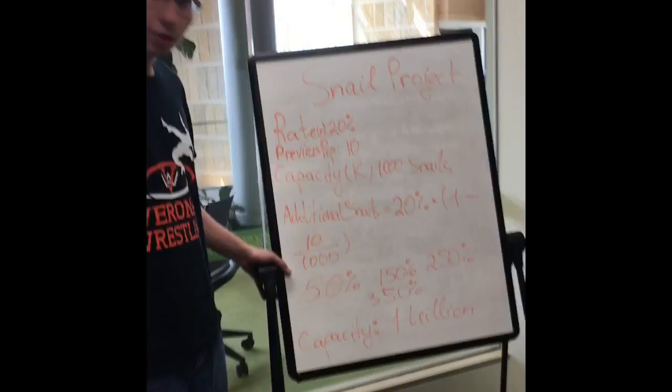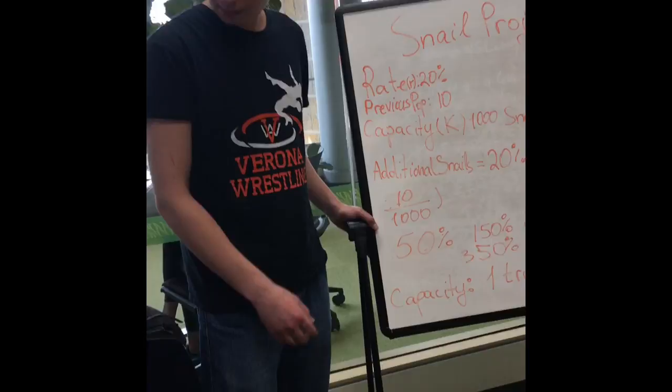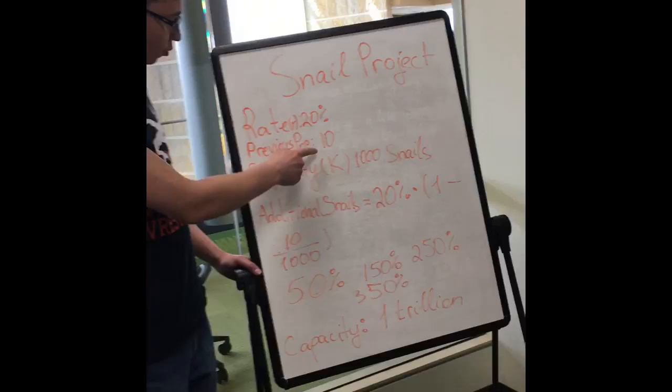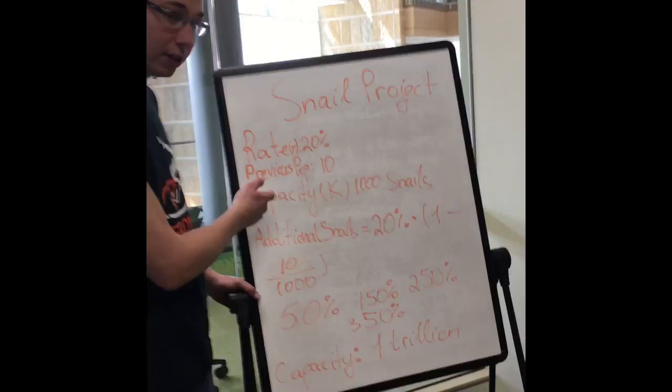Our idea is to examine the growth of a population of snails over a period of 52 weeks. The base variables that we start with are 20% for our rate. We'll have 10 snails at week zero, and then our capacity is a thousand snails.